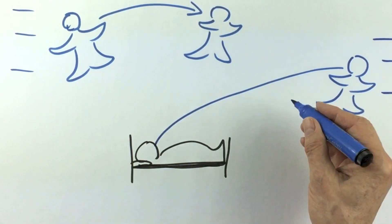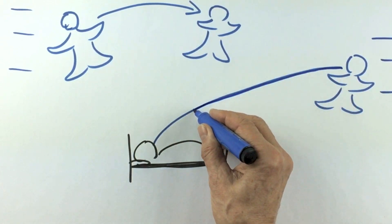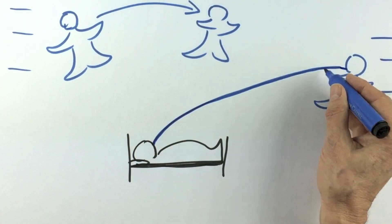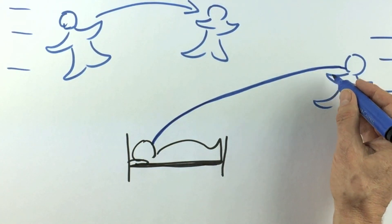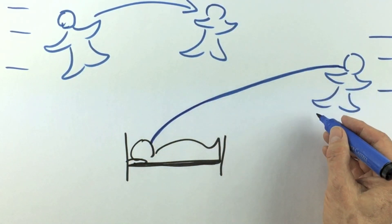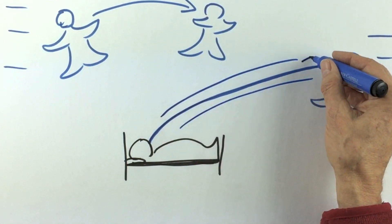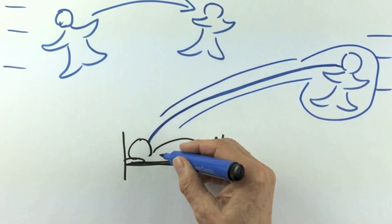Our soul leaves our body but stays connected via our silver cord. This projection is a natural event to assist our spiritual growth and development. Therefore it is law abiding and we are totally protected during such a visit during our sleep.